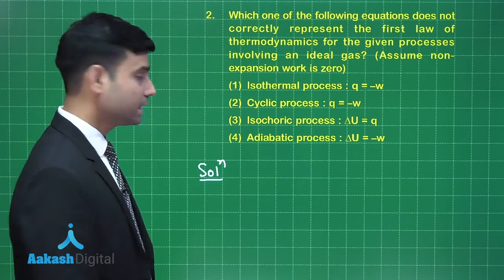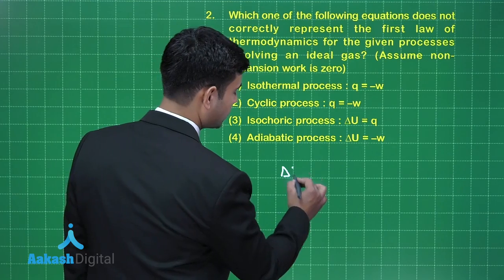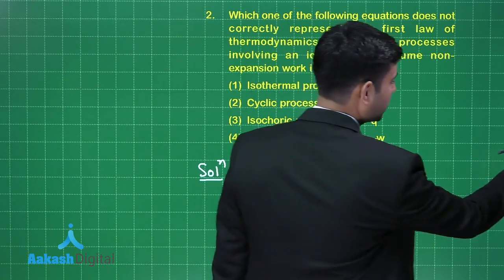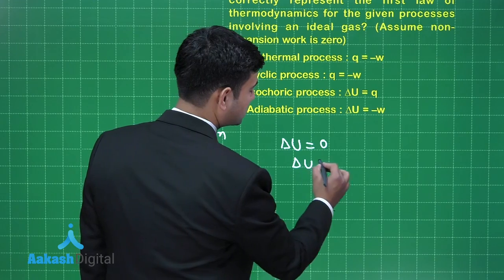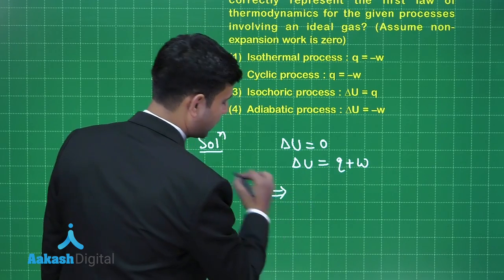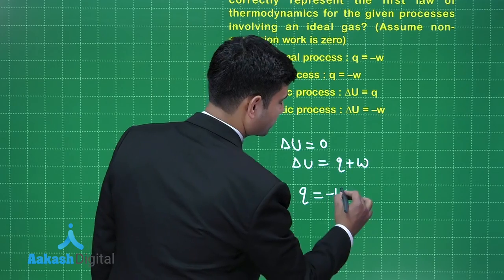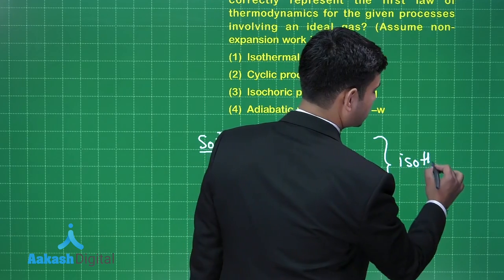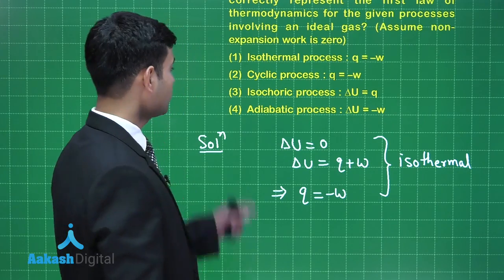For the first option, the isothermal process: in an isothermal process, delta U = 0. From the first law of thermodynamics, delta U = Q + W, so for an isothermal process Q = -W. These expressions are valid for an isothermal process.